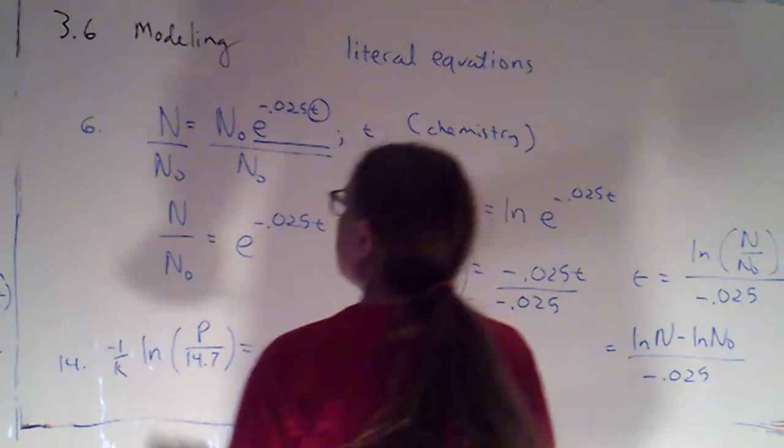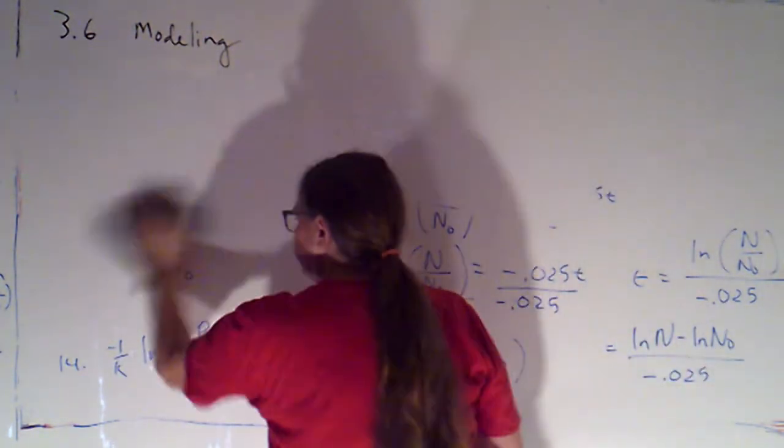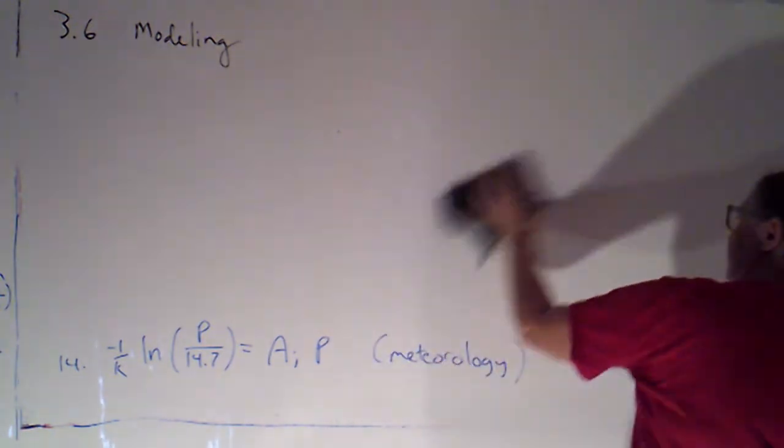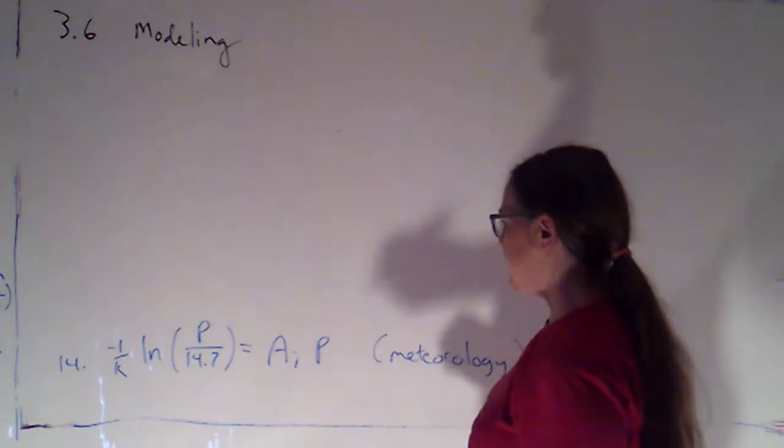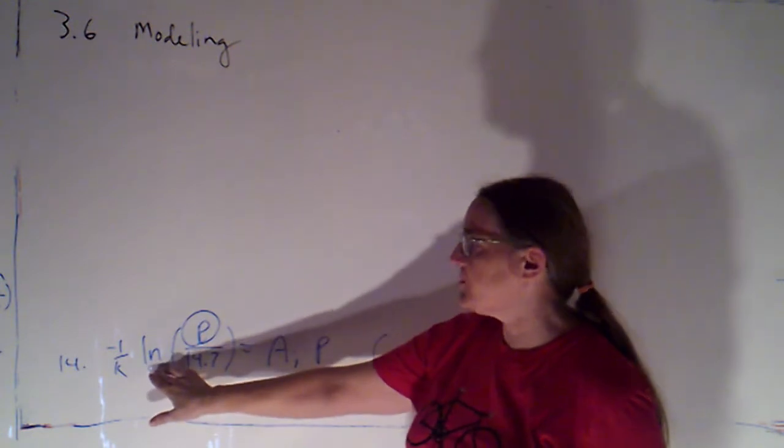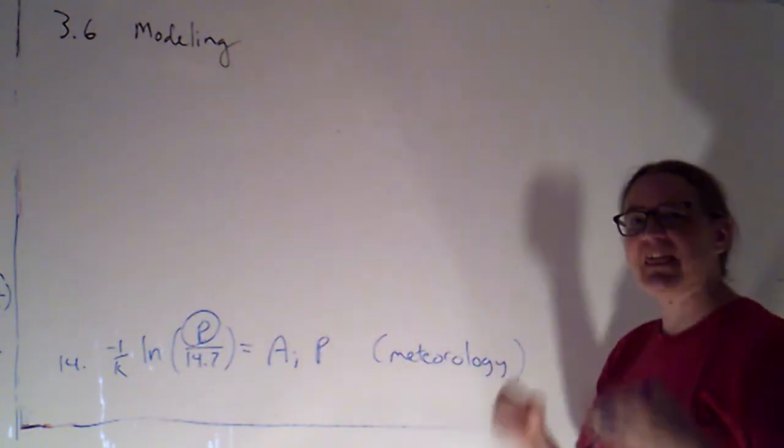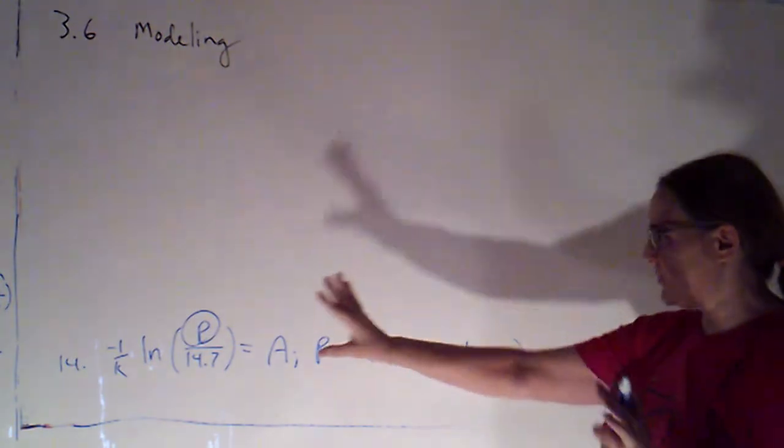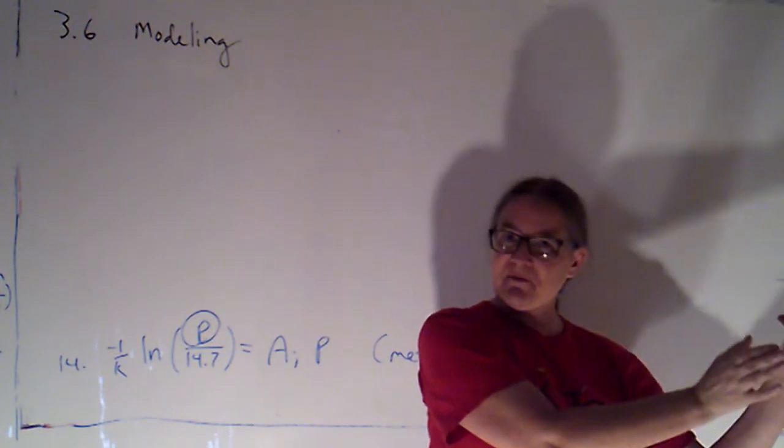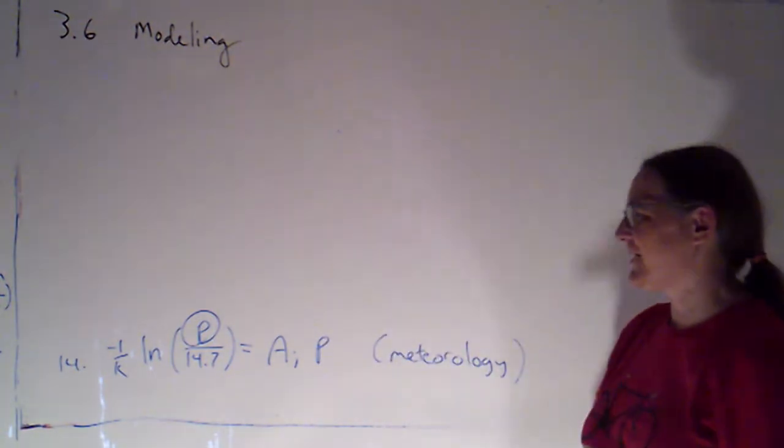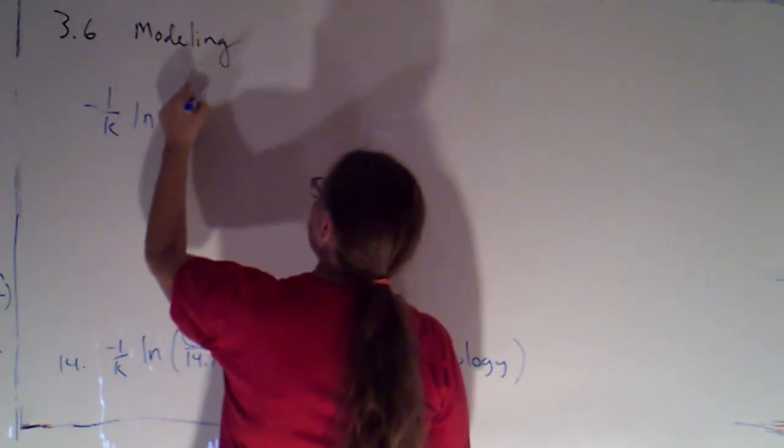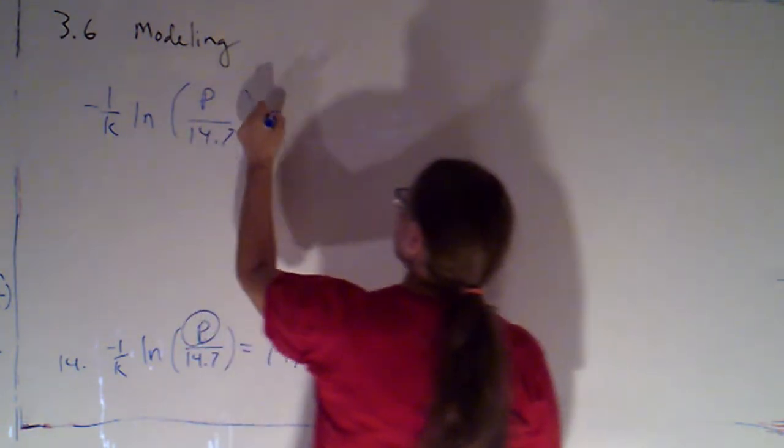So let's try number 14 here. So I've got this equation we want to try to solve for p. Now in this equation, p is part of the argument of log, so now I'm trying to isolate the log expression. There's only one log in the problem, so I'm going to try to get this log is equal to that number. It's just the number is going to be expressed in terms of all of these other variables. Let me just write this again at the top of the board here. Negative 1 over k, natural log p over 14.7 is equal to a.